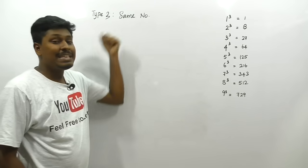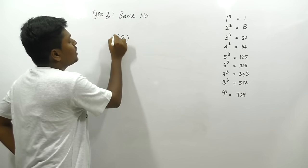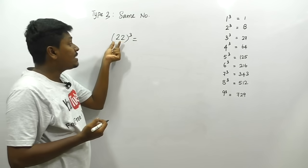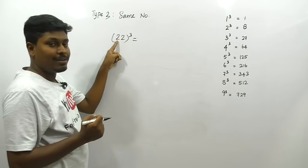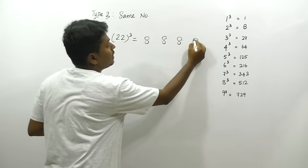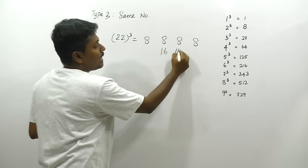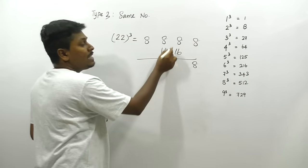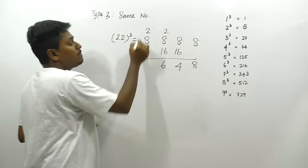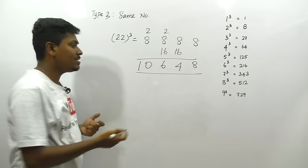Type 3: same digits — like 22³, 33³, 44³. For 22³: since both digits are the same, cube either digit: 2³ = 8. Write it four times: 8, 8, 8, 8. Leave the first and last, double the center two: double 8 = 16 for each. Adding: 8, 16+8=24 → write 4, carry 2; 8+2=10, 10+16=26 → write 6, carry 2; 8+2=10. So 22³ = 10648.